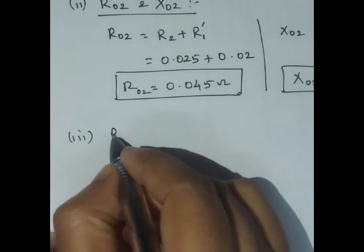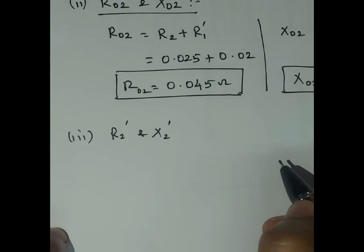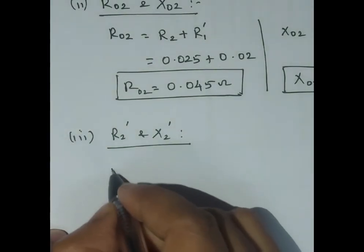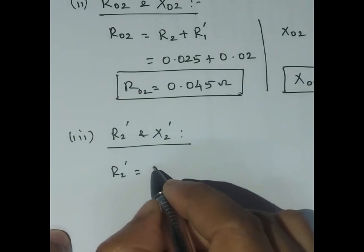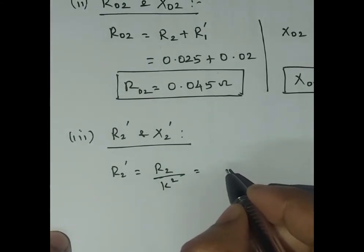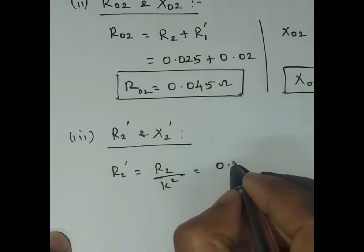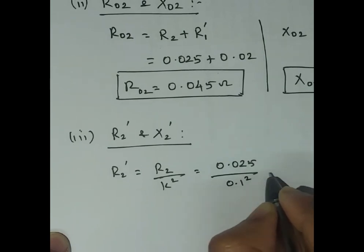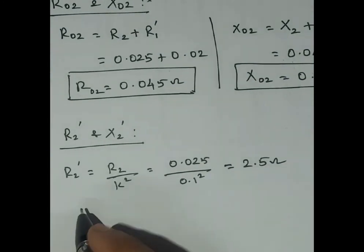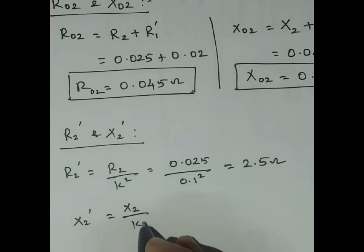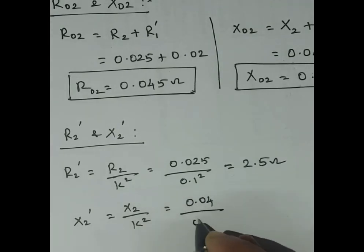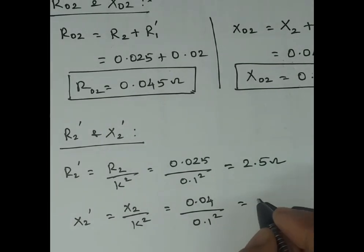For Case 3, we find R2' and X2' — the resistance and reactance of secondary referred to primary. R2' = R2 / K² = 0.025 / 0.01 = 2.5 ohm. Similarly, X2' = X2 / K² = 0.04 / (0.1)² = 4 ohm.